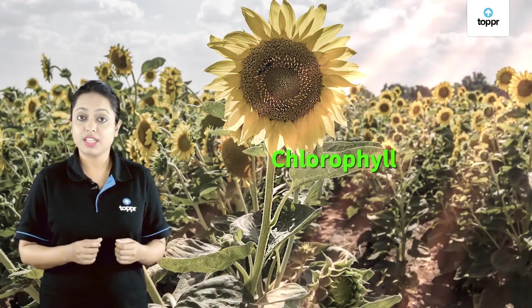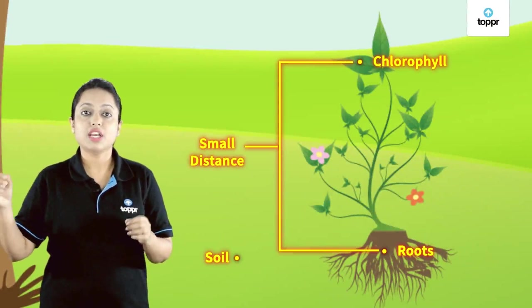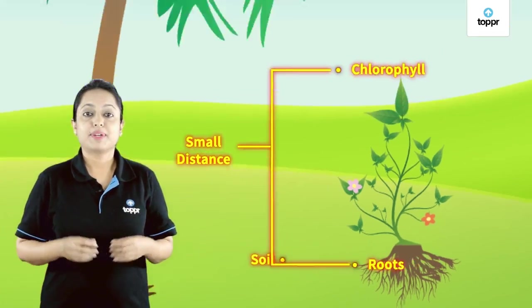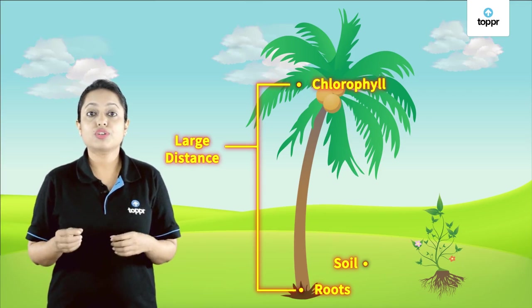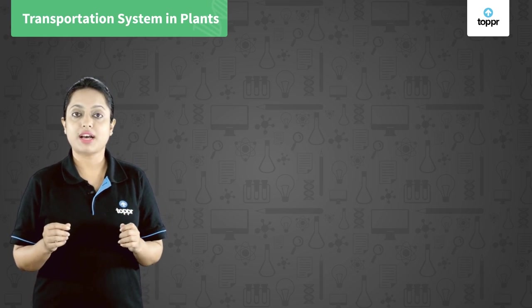We already know about transportation in humans, so what about transportation in plants? Plants make their food in their leaves, and for doing that they require sunlight, chlorophyll, carbon dioxide, and water. Plants absorb this water through the soil by the roots. If the distance between the roots and the leaves is small, water can be transferred by simple diffusion. But this distance is very large in tall plants, so plants have a transportation system. In this lesson we study transportation in plants in detail.